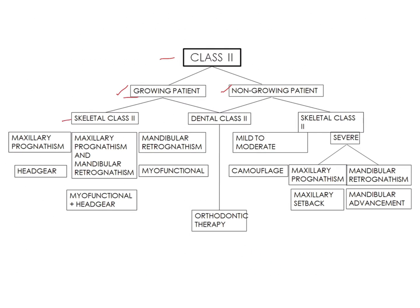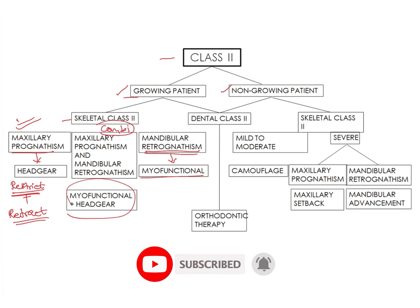If the child is a growing patient with a skeletal Class II due to maxillary prognathism, the treatment of choice would be a headgear, because it restricts the maxillary growth so that mandibular growth can catch up and correct the Class II. If there is mandibular retrognathism, we will give a myofunctional appliance such as an activator or twin block to overcome the retrognathism. If it is a combination of both factors, we give a combination appliance incorporating effects of both a headgear and a functional appliance.